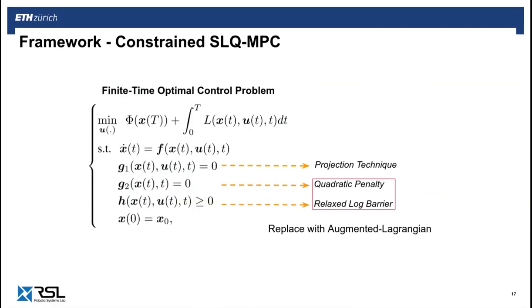Alternatively, in order to avoid the numerical issues discussed earlier, we propose an SLQ variant that handles inequalities and state-only equality constraints with an augmented Lagrangian approach. On the other hand, we still use the same projection technique for state-input equalities, since it already works quite well in enforcing strict feasibility.